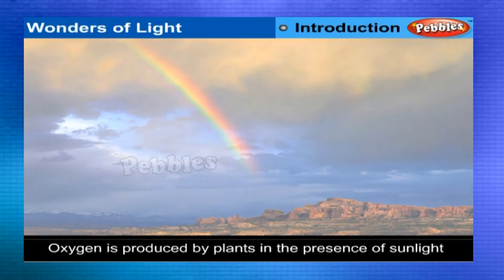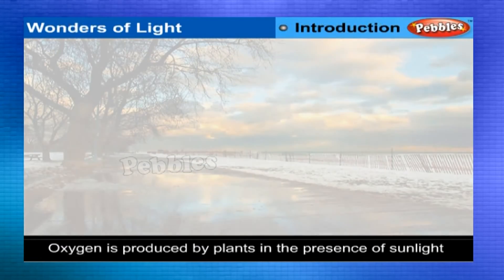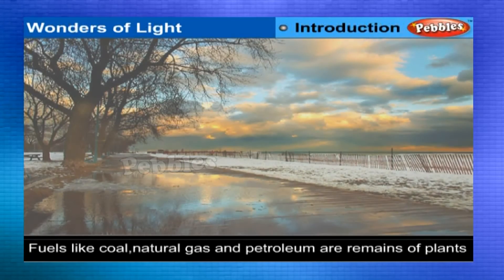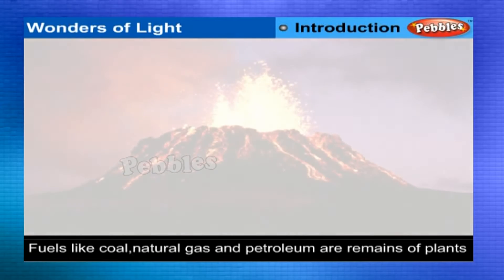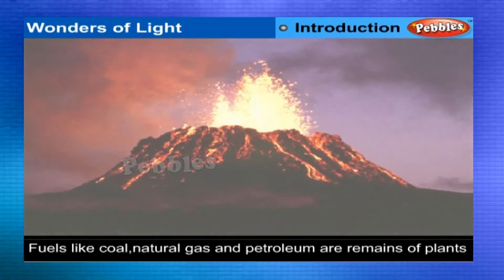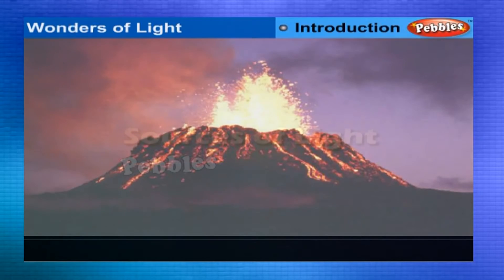Oxygen in the air, so necessary for us to live, is produced by plants in the presence of sunlight. Fuels like coal, natural gas and petroleum are nothing but remains of plants which died millions of years ago and got buried under the earth. In their molecules is locked the energy the plants had received from the sun rays.